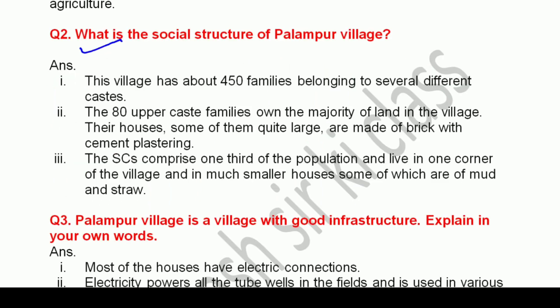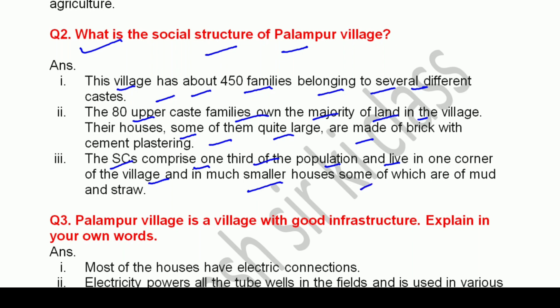Now the second question: What is the social structure of Palampur village? Yaani Palampur gaon ka social structure — that means society kaisi-kaisi divided hai. The answer is: This village has about 450 families belonging to several different castes. The 80 upper caste families own the majority of land in the village — gaon ki zyada tar zameen par unhi 80 upper caste families ka adhikaar hai. Their houses, some quite large, are made of brick with cement plastering. And the SCs — jo schedule caste hain — comprise one third of the population and live in one corner of the village, in much smaller houses, some of which are of mud and straw — yaani woh ghaas-phoos se bane kacha ghar hain.